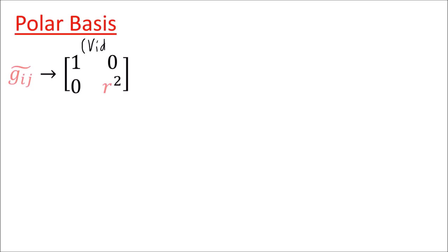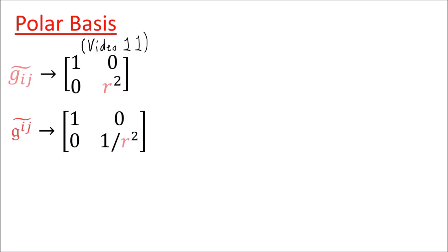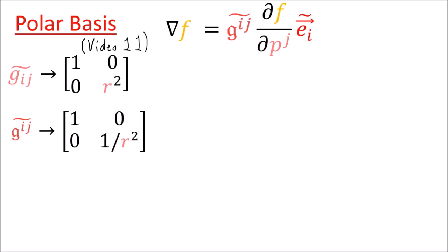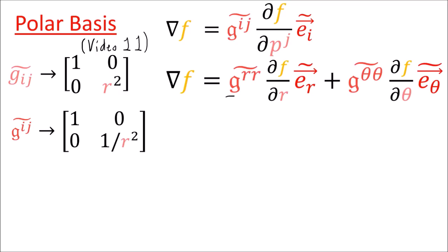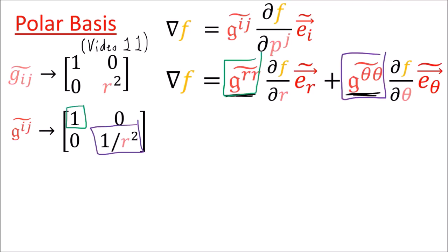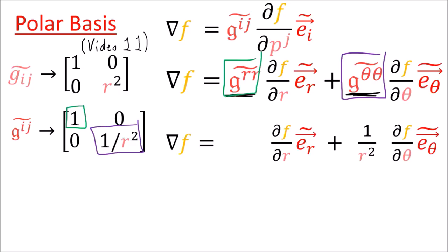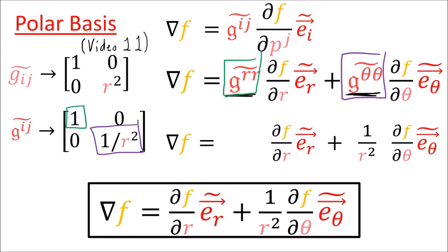In polar coordinates the metric tensor looks like a specific matrix, as calculated back in video 11 of this tensor calculus series, so the inverse metric tensor looks like the inverse of that matrix. Since the matrix is diagonal we can just take the reciprocal of the diagonal elements. When we apply this formula for del f, all the off-diagonal elements are zero, so the summation only has two terms: the rr term and the θθ term. With these inverse metric tensor components, the rr component is 1 and the θθ component is 1/r², so the formula for the gradient of f in polar coordinates includes this extra 1/r² term.